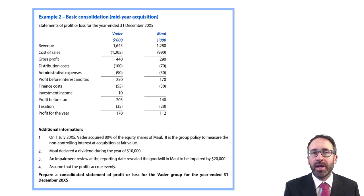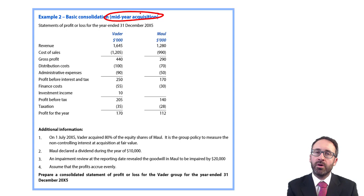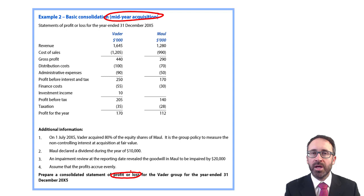Let's go through and have a look at a basic consolidation example that looks at a mid-year acquisition, but also goes through the pro forma for our group statement of profit or loss question if we're to get that within an exam style question.